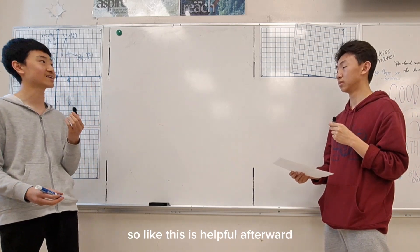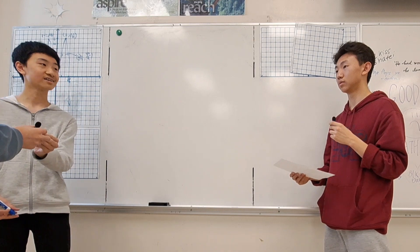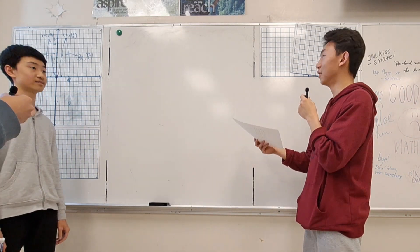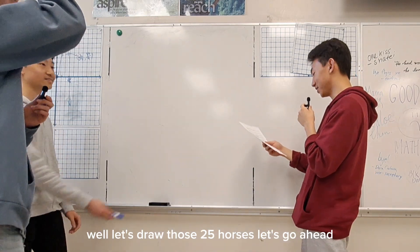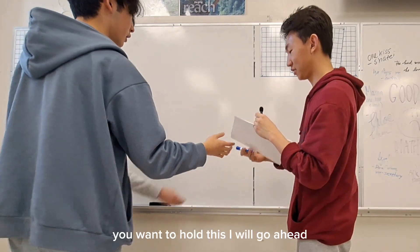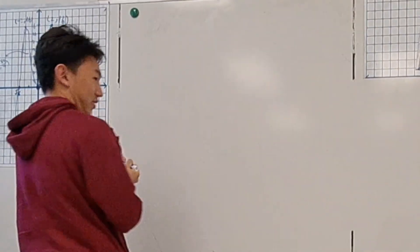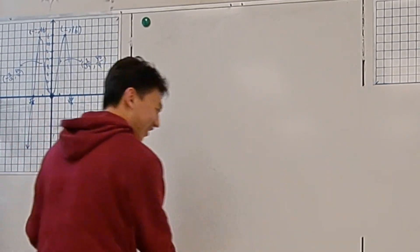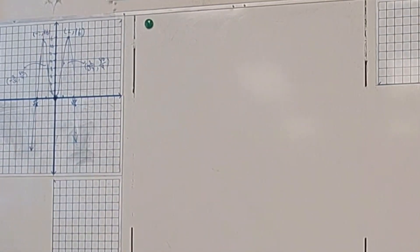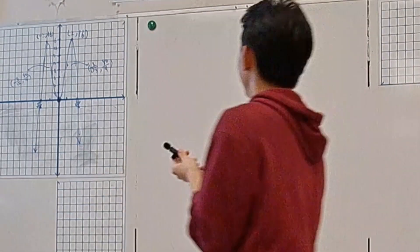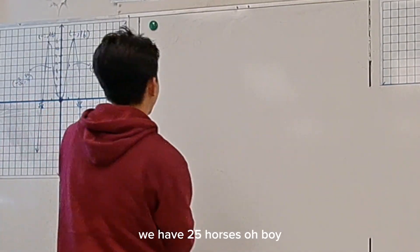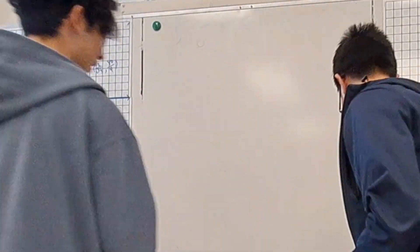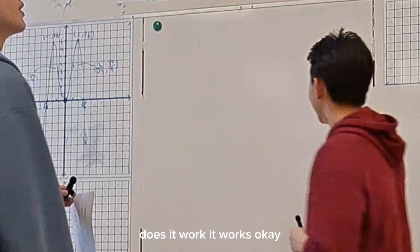So should we go at it? We can start. Well, let's draw the 25 horses. Let's go ahead. We have 25 horses. I'm just going to use—oh boy, just use that one. Oh, that one's small. So we have 25 horses. Does that work? It works, okay.